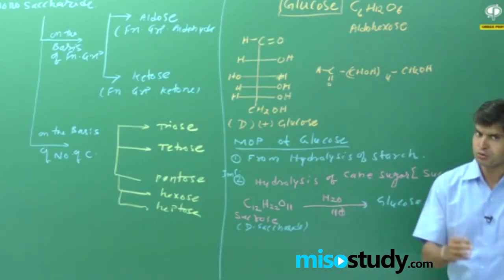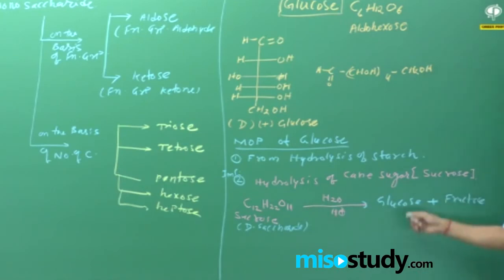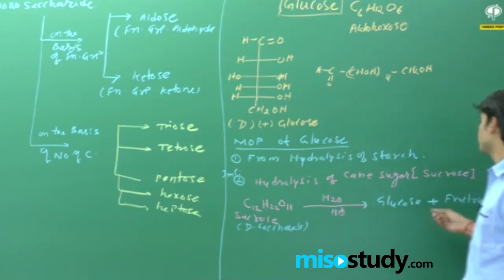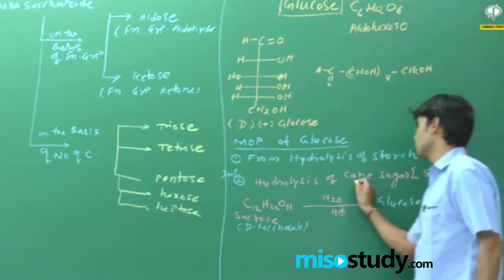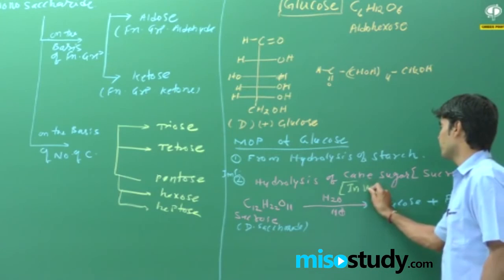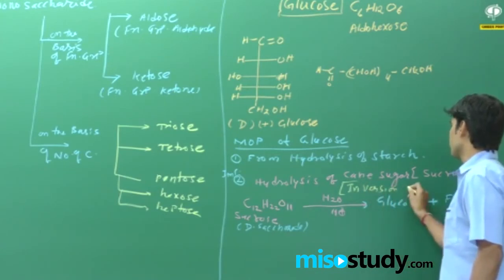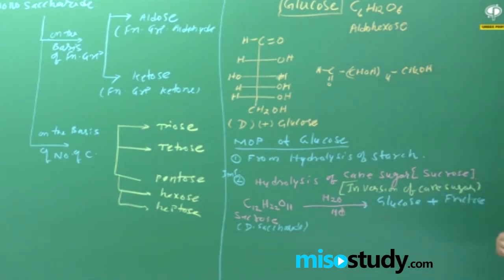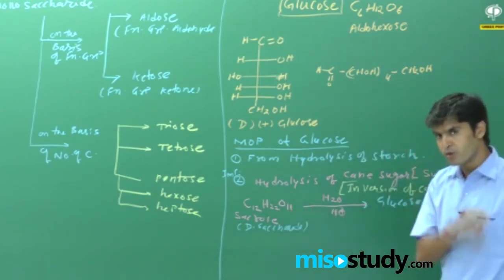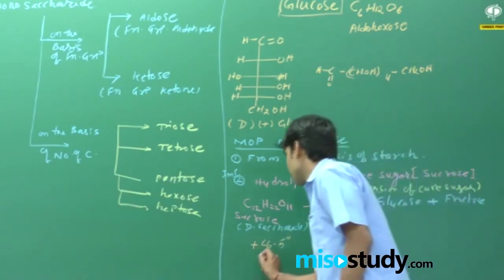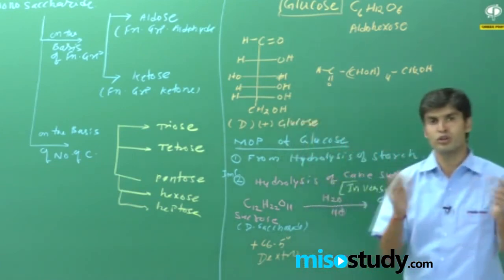From the hydrolysis of cane sugar, two monosaccharides are formed: one is glucose and another is fructose. This phenomenon is also known as inversion of cane sugar. The concept is that cane sugar has an optical rotation of +66.5 degrees, meaning cane sugar is dextrorotatory. When we start the hydrolysis reaction, the solution is dextrorotatory.